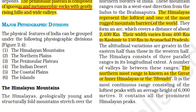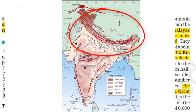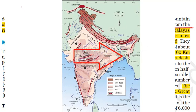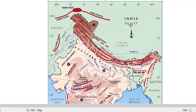The Himalayas are geologically young and structurally fold mountains. They border the northern portion of India, running from west to east. They represent the loftiest and one of the most rugged mountain barriers in the world, in the form of an arc. Their length is about 2,400 kilometers, width is 400 kilometers in Kashmir and 150 kilometers in Arunachal Pradesh.